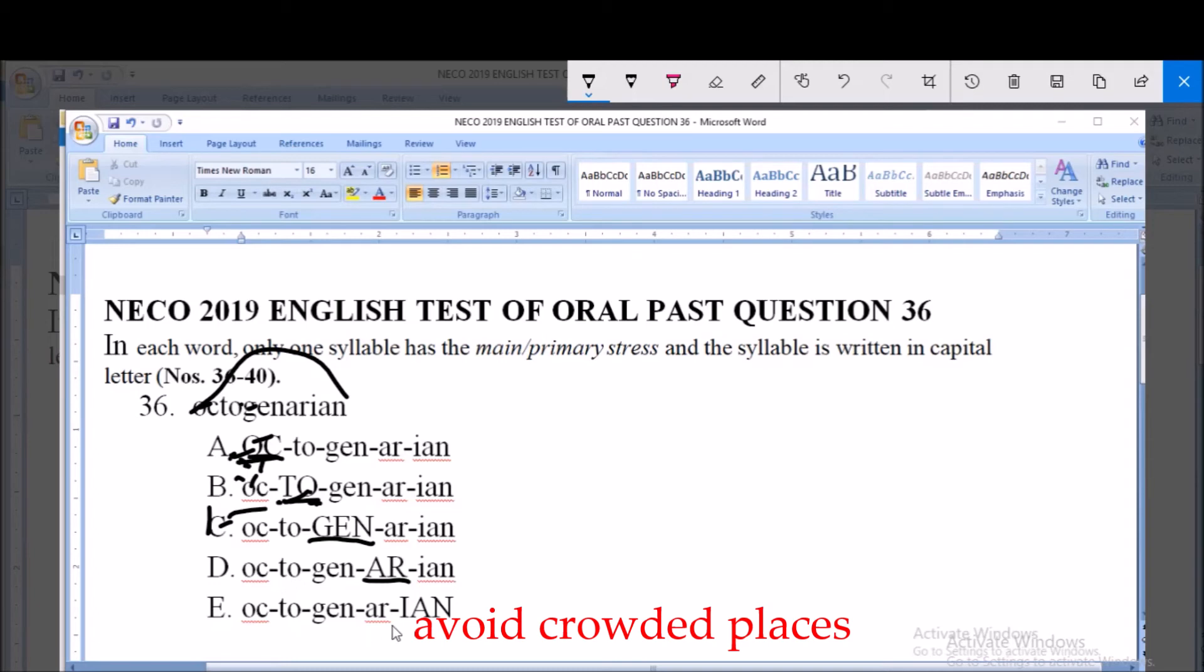In option E, IAN is raised. But in this word octogenarian, if you look at where we emphasize, you'll see that our stress will fall on the AR. Therefore, option D is correct, where we have our primary stress.